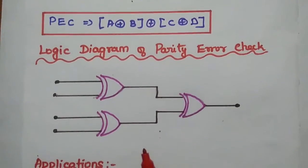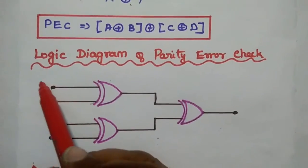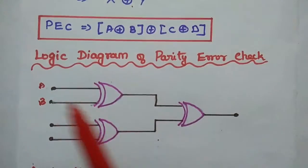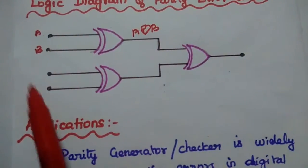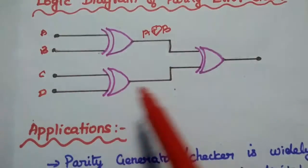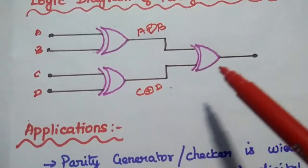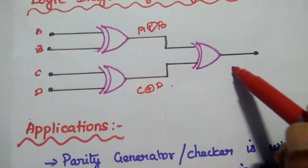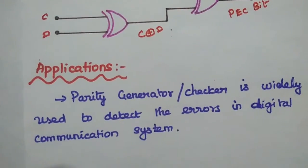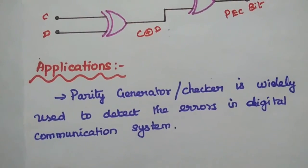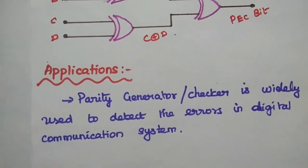This is the logic diagram for the parity error checker. Inputs A and B go through a XOR gate, inputs C and D go through another XOR gate, and their outputs feed into a third XOR gate to produce the PEC bit. The applications of parity generator and checker are widely used to detect errors in digital communication systems.